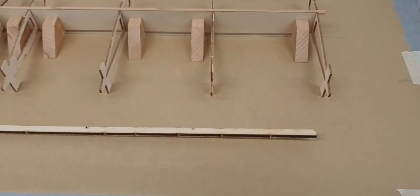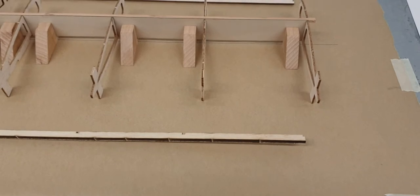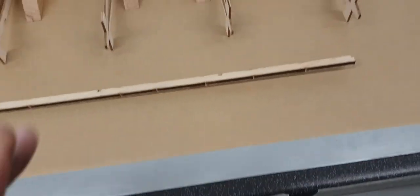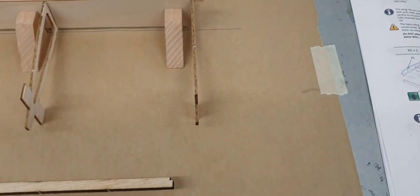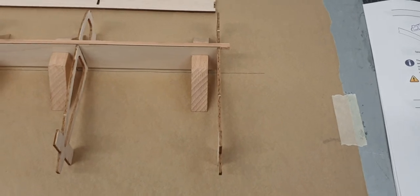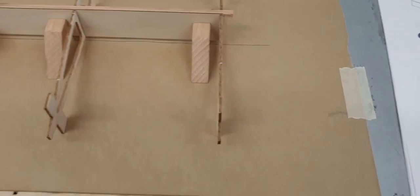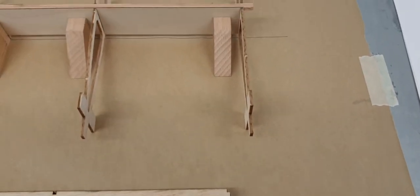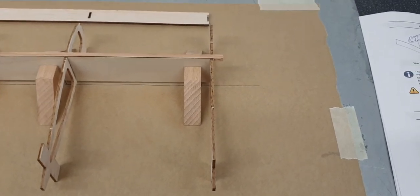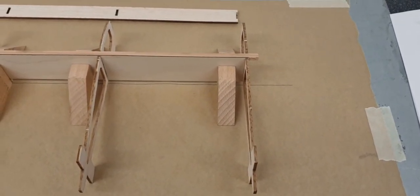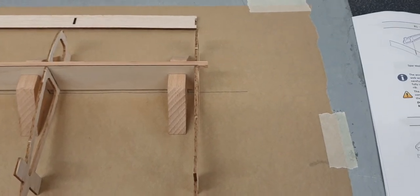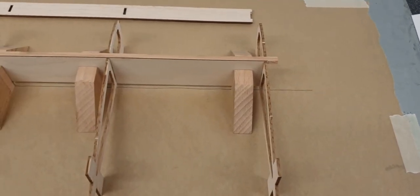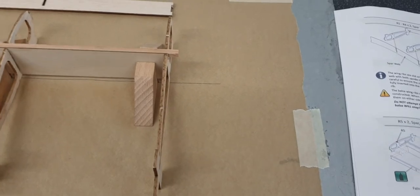I'm using this instead of the traditional building board where you pin your parts down to hold them flat. You use magnetic blocks. So my first stage of the job, if you like, was to cover the building board, or the metal sheet I've got on my worktop, with greaseproof paper. This is to stop the glue or any adhesives that I'll be using to manufacture the wing, just in case it gets onto the building board, it won't stick or anything like that. So that's stage one.